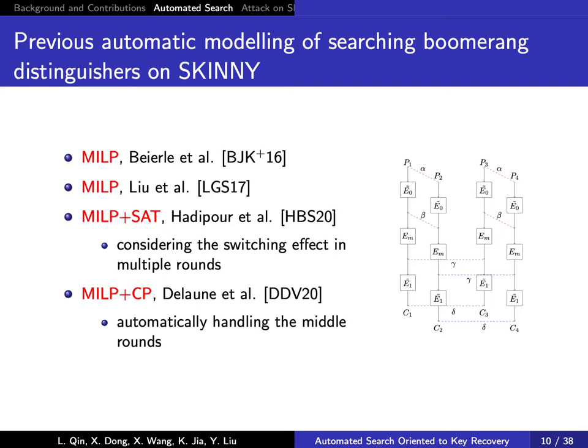Recently, Hadipour et al. introduced a heuristic approach to search boomerang distinguishers using MILP/SAT models. They introduced new tables for S-boxes to model the dependence between the upper and lower differentials, and evaluated the probability of the middle part experimentally and mathematically. Almost at the same time, Delaune et al. proposed a new automatic tool to search boomerang distinguishers and automatically handle the middle rounds. They also provided their source code to facilitate follow-up works. Our new model is mainly based on these last two works.